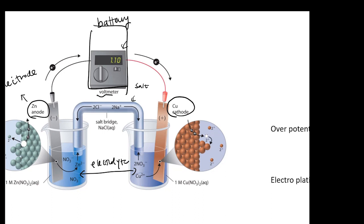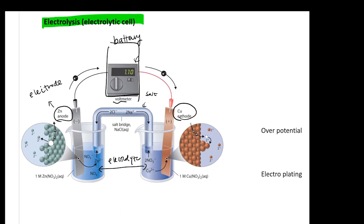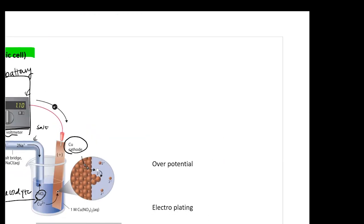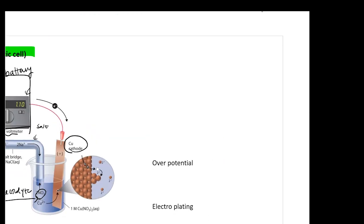Because of electrolysis, you don't need to separate the two solutions anymore, because all you have is a simple container with all your reactants inside one single beaker. So in reality, when you look at your electrolysis cell, you have all your electrolytes put inside one single beaker.